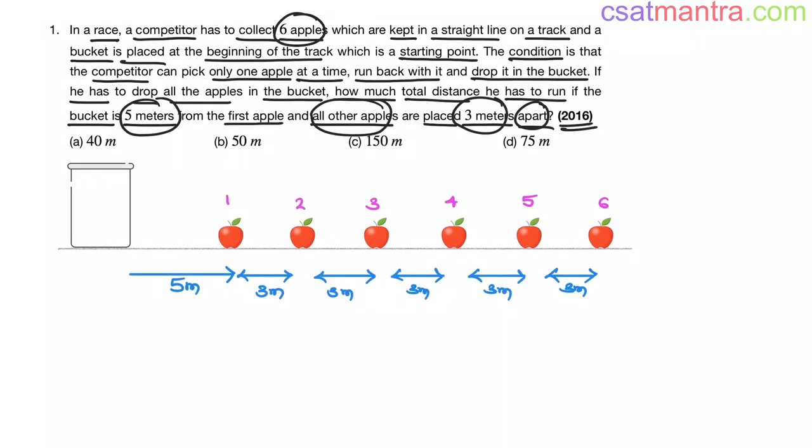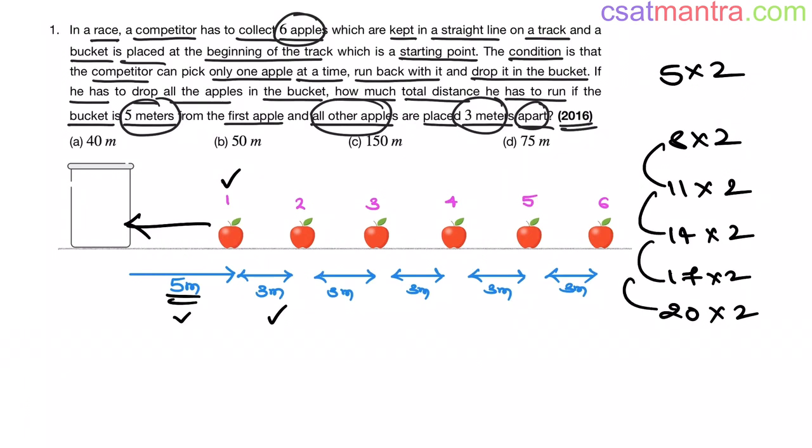You can solve this problem manually also. When it comes to first apple, he would have travelled 5 into 2. This distance backward also. When it comes to second apple, 5 plus 3, 8 into 2. When it comes to third apple, that is 11 into 2. When it comes to fourth apple, that is 14 into 2. Fifth apple, that is 17 into 2. Sixth apple, that is 20 into 2. See, I have increased 3 each time. So just add these values. You would be getting 150 meters.